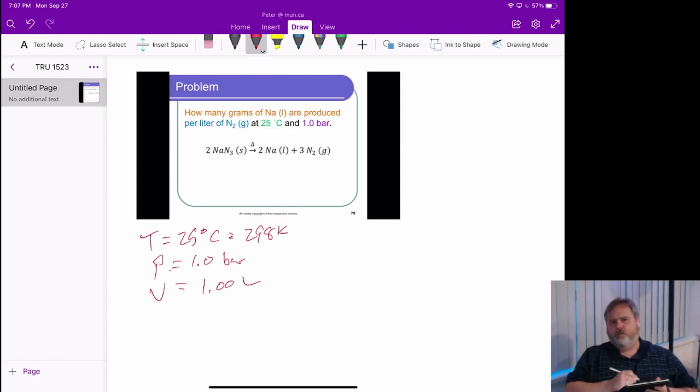When you get to pick, don't pick something that makes your problem worse in terms of giving you an answer. Pretty simple. So based on that, PV equals nRT, which means n equals PV over RT.